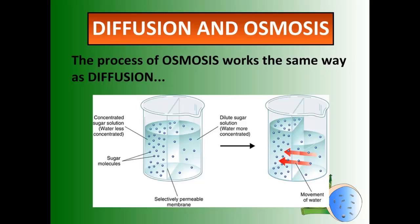Think of this example: let's say I had a beaker with a fine filter that was selectively permeable, and I placed a lot of salt water or sugar on the left side and not a lot on the right. The water wants to move from an area of high concentration — where there's lots of water — to an area of low concentration. Looking at the diagram on the right, the water moves from the right side of the beaker into the left side, because on the left side there's a higher concentration of sugar particles, meaning there's not a lot of water. The water moves through the selectively permeable membrane in only one direction.